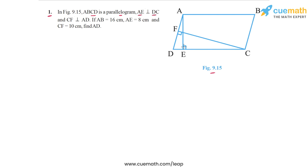AE is perpendicular to DC, and CF is perpendicular to AD, which is shown here. Now, we are given that AB is 16 cm, AE is 8 cm, and CF is 10 cm, and using this, we have to find AD. This is the problem.